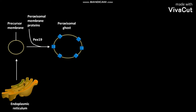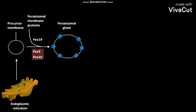PEX-3 and PEX-16 are required for the proper insertion of proteins into the forming peroxisomal membrane. The peroxisomal ghost can import proteins targeted to the matrix.